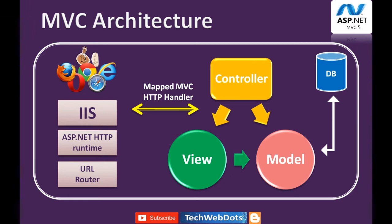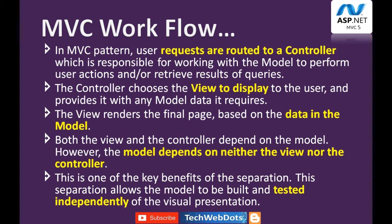The model communicates with the data to fetch it — generally the model communicates with the DAL (Data Access Layer). More specifically, a request is routed to a controller, which is responsible for working with the model to perform user actions or retrieve query results. The controller then chooses the view to display to the user and provides it with any model data it requires, and the view renders the final page based on that data.